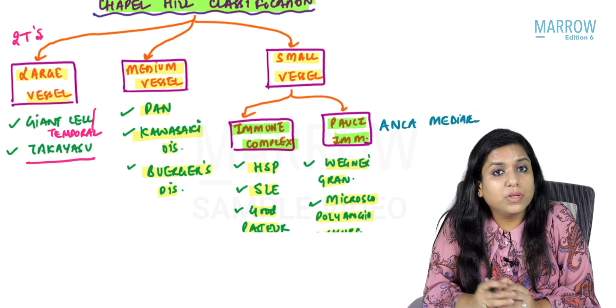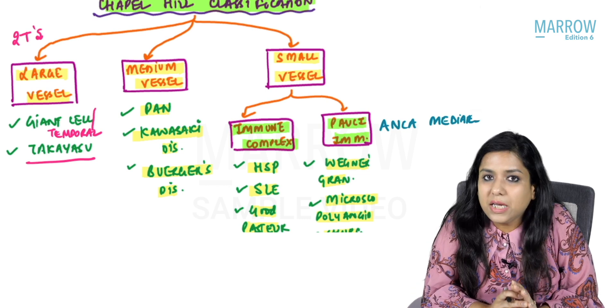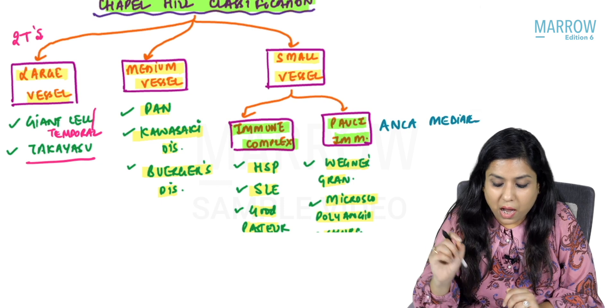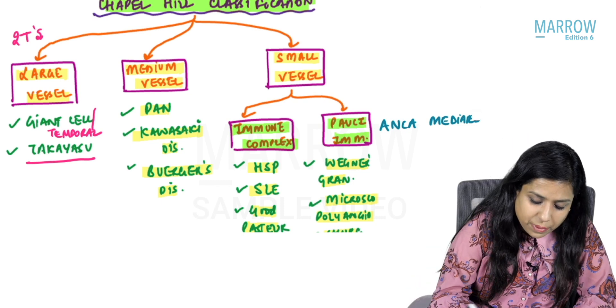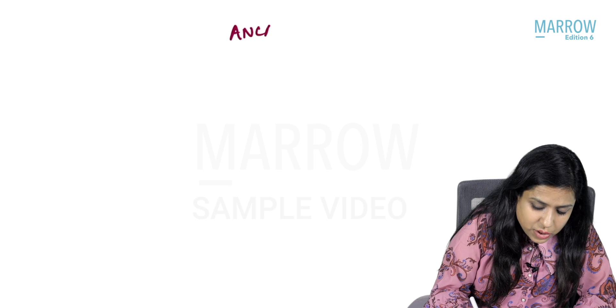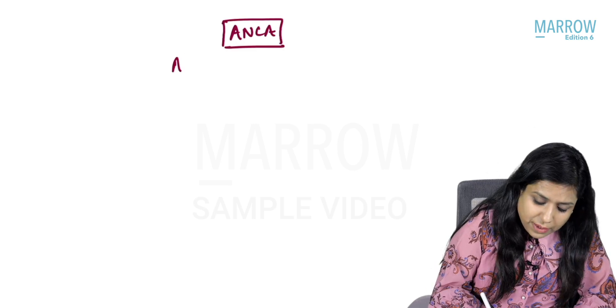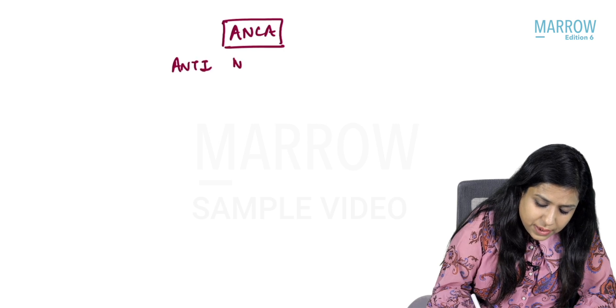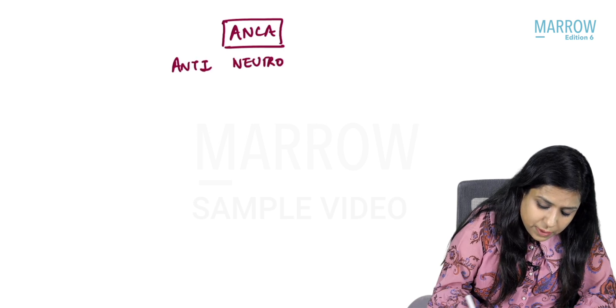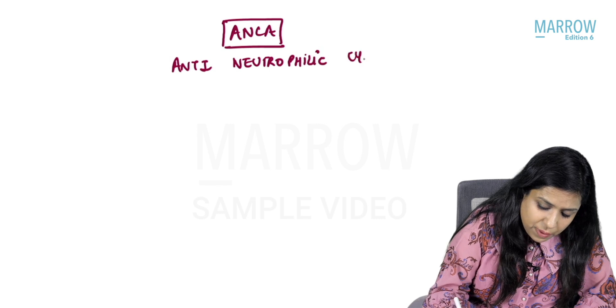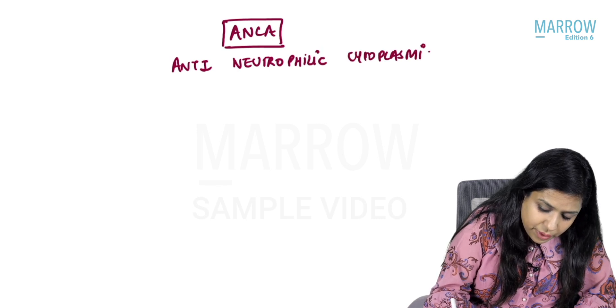Before moving to the details of each vasculitis individually, one very important topic is ANCA. The full form of ANCA is Anti-Neutrophilic Cytoplasmic Antibody.